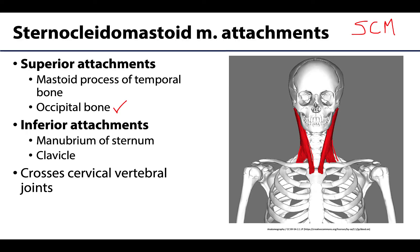There will be the clavicular attachment along the collarbone or clavicle, and a more medial attachment on the top part of the sternum — the sternum is your breastbone in the midline region, and the top part of the sternum is called the manubrium. You can see this muscle is crossing multiple cervical vertebral joints, basically all of them, so it will most directly affect actions at these joints.